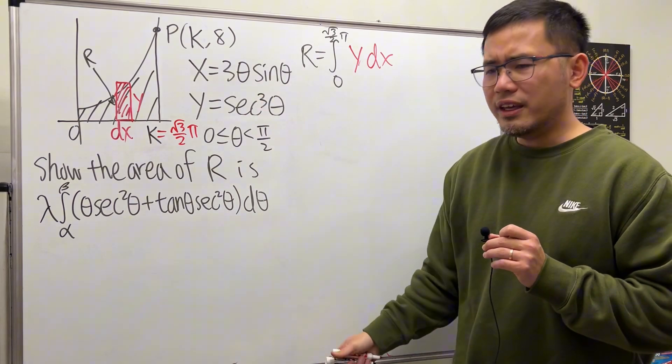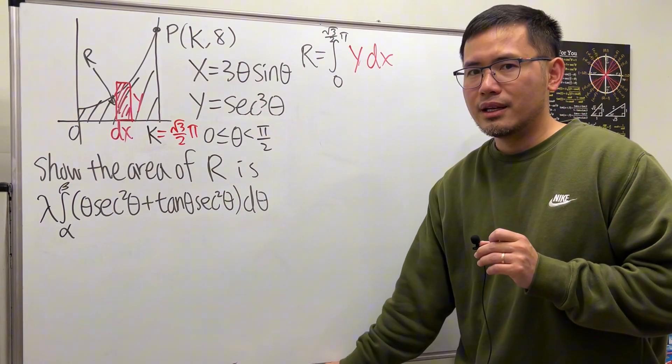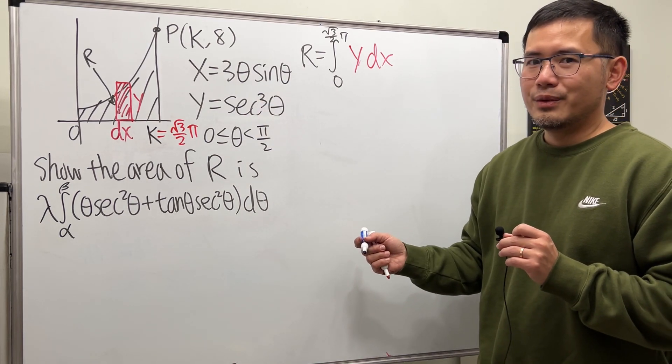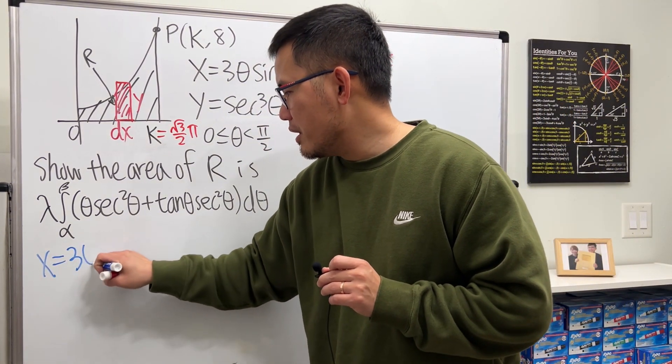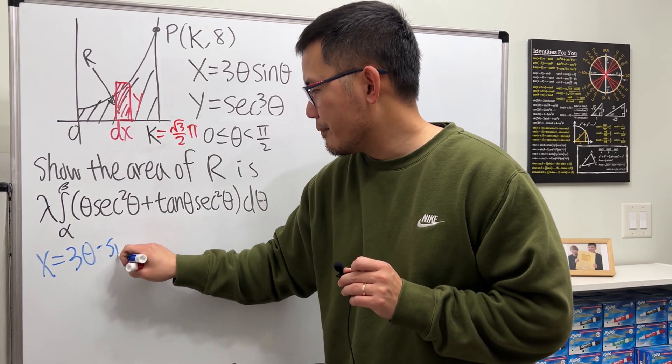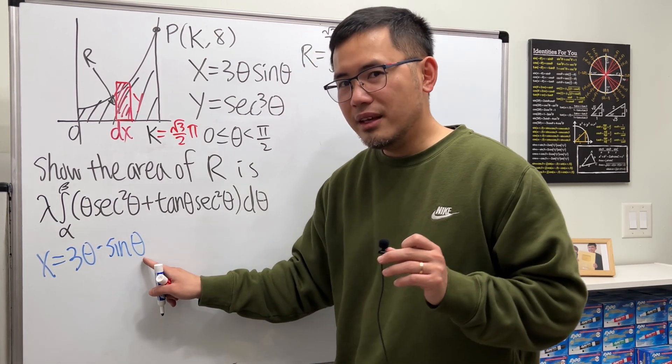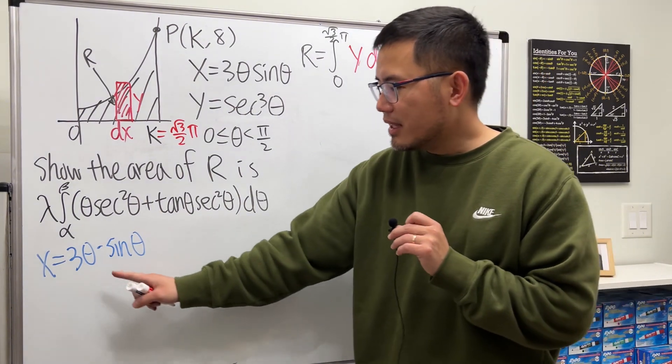Okay, y and dx. Can we just look at the x equation, solve for theta, then plug into y and do the usual way? Well, the answer is no. Have a look: x equals 3θ sinθ. We have the theta inside the sine function and the theta on the outside.